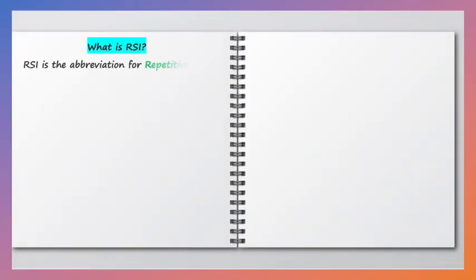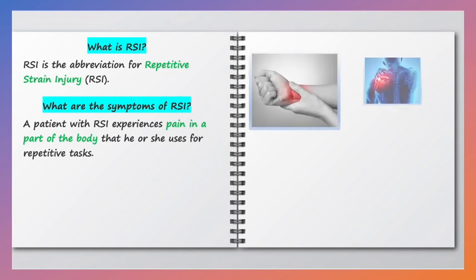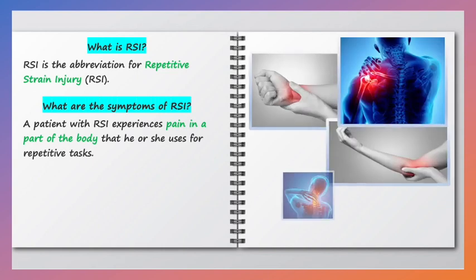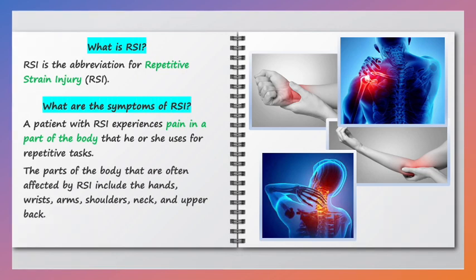What is RSI? RSI is the abbreviation for repetitive strain injury. A patient with RSI experiences pain in a part of the body that he or she uses for repetitive tasks. The parts of the body often affected by RSI include the hands, wrists, arms, shoulders, neck, and upper back.